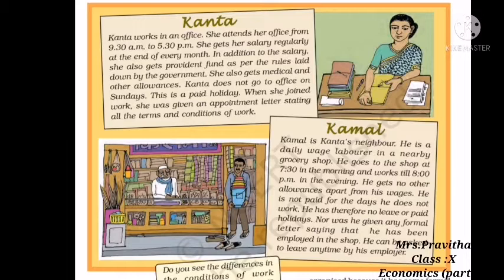Let us discuss about Kanta. Kanta works in an office. She attends her office from 9:30 AM to 5:30 PM. She gets her salary regularly at the end of every month. In addition to the salary, she also gets provident fund as per the rules laid down by the government. She also gets medical and other allowances. Kanta does not go to office on Sundays — this is a paid holiday.